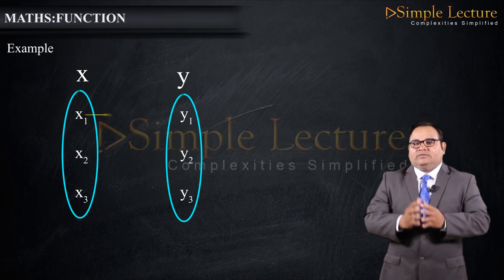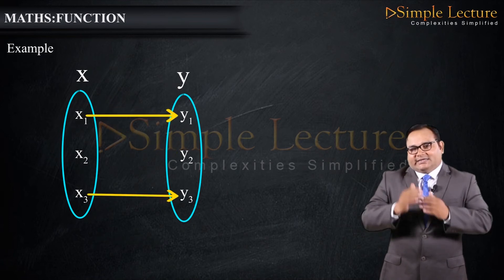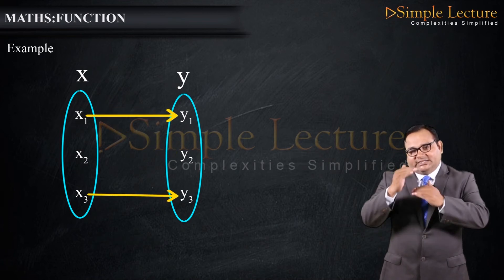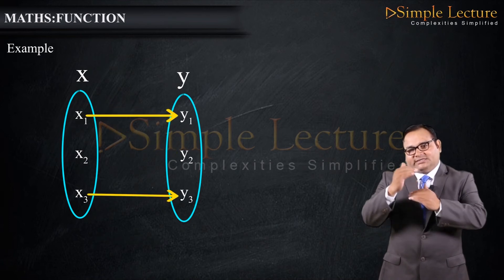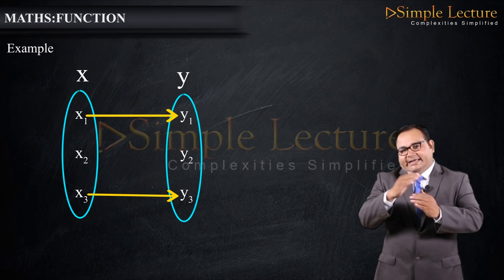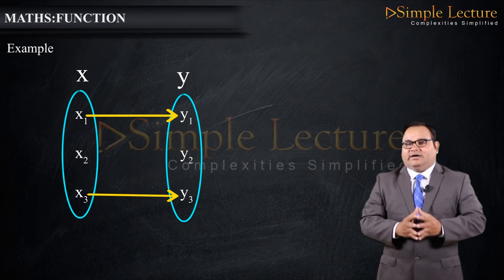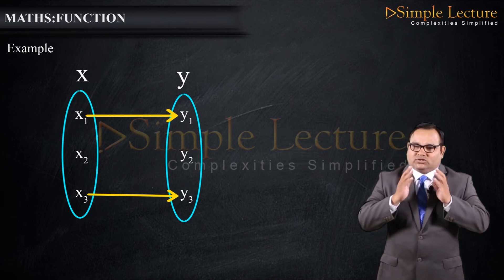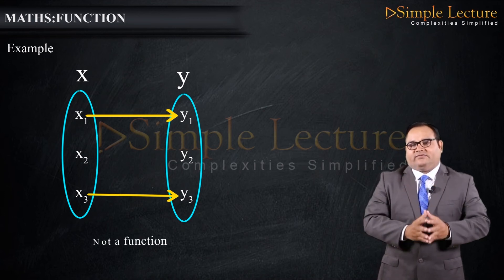In the second example, each element must have some image, but x2 is not having any image in set Y. So this is also not a function.